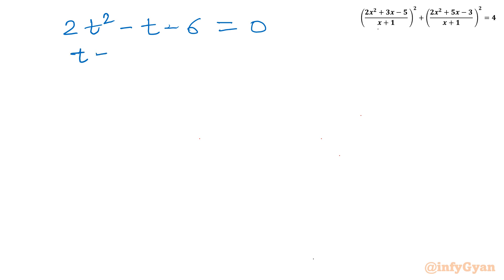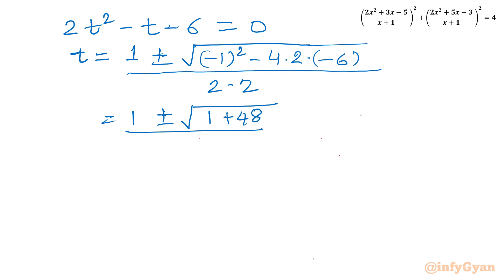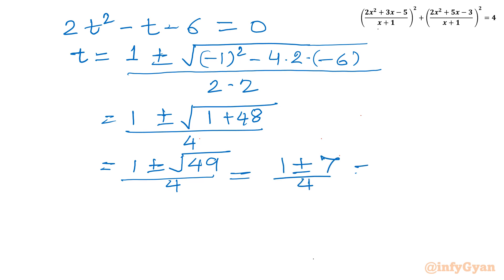I will use the quadratic formula. So t = [-(-1) ± √(1 - 4·2·(-6))] / (2·2) = (1 ± √(1 + 48)) / 4 = (1 ± √49) / 4 = (1 ± 7) / 4. With the plus sign: 8/4 = 2. With the minus sign: -6/4 = -3/2.